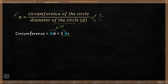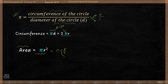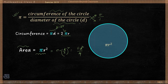The area of a circle is equal to πr². This can also be written as π × (d/2)² = πd²/4. So area = πr², where r is the radius of the circle and O is the center.